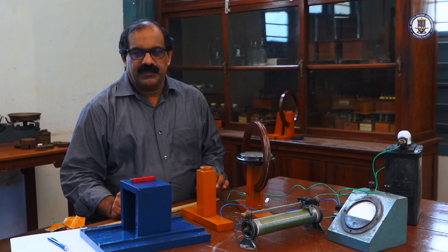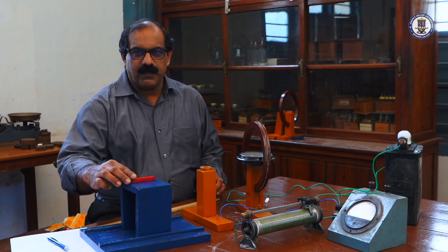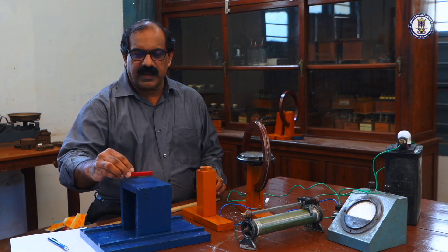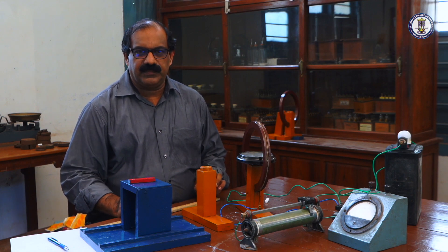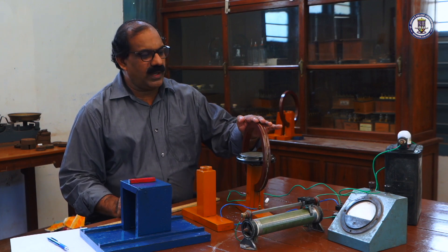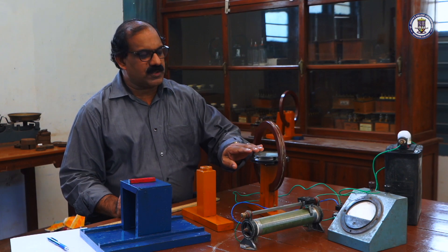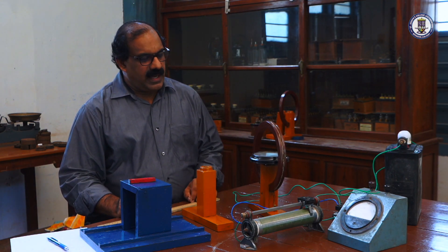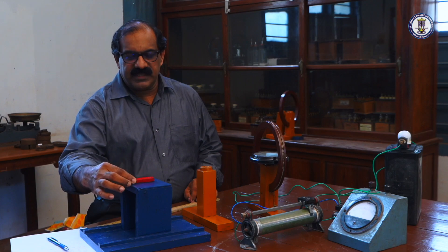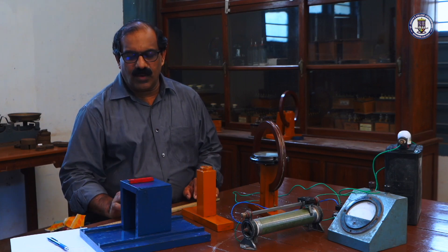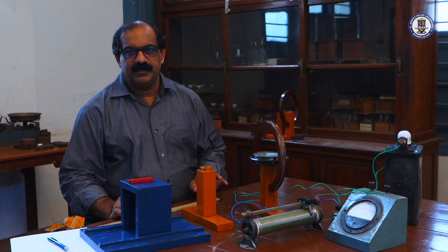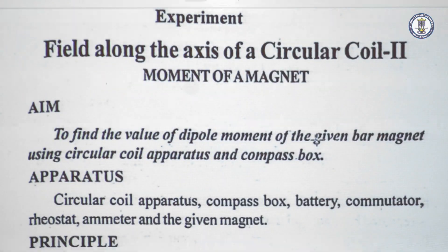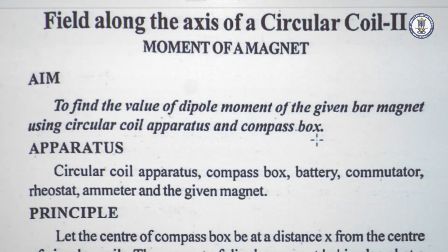Determination of dipole moment of a given bar magnet using the circular coil apparatus. We are provided with a circular coil apparatus — a circular coil with a compass box at the center — and a magnet which can be placed at any point on the axial line of the circular coil.